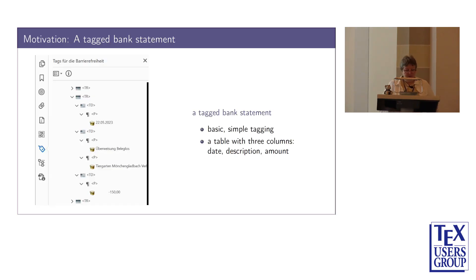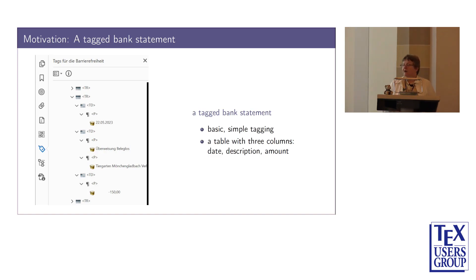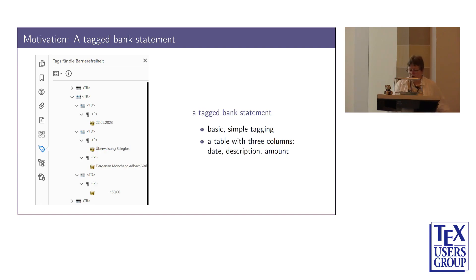As a short motivation, I'd like to show a screenshot of one of my bank statements. Since a few months, this bank statement is tagged. It's a quite simple document — basically a large table with three columns: the date, a multi-line description, and the amount. The tagging is quite simple: there's a TR for the row and a TD for the various cells — quite similar to what you get in HTML.